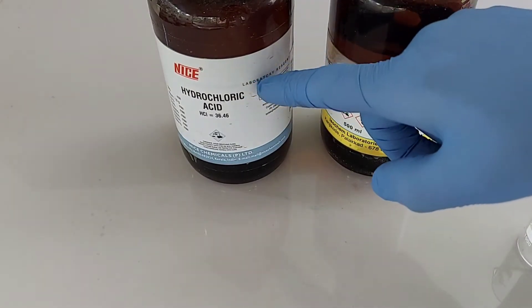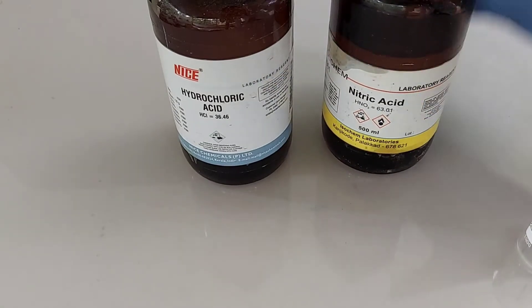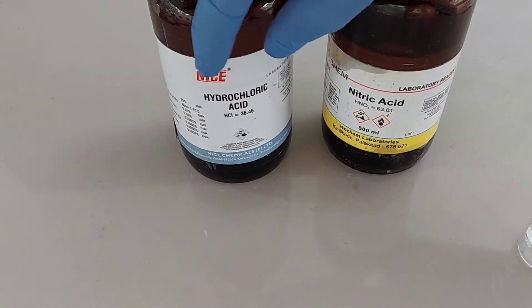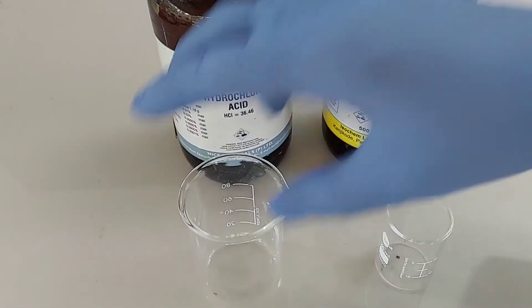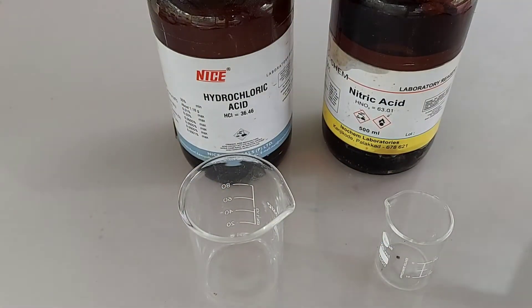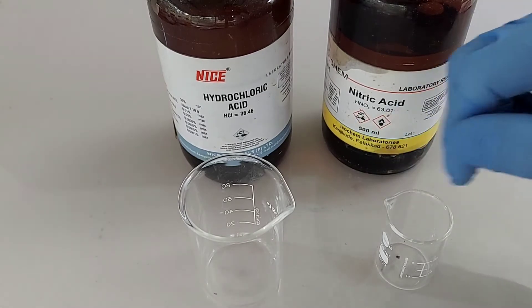For making Aqua Regia, we need both hydrochloric acid and nitric acid. Aqua Regia is a mixture of hydrochloric acid and nitric acid in a 3 to 1 ratio. We need 3 parts of hydrochloric acid and 1 part of nitric acid.